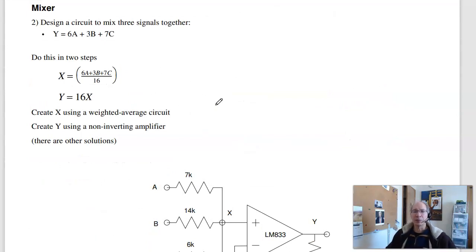Problem two is build a mixer. And there are many ways to do this. One approach is to do it in two stages. First, I'll find the weighted average of a, b, and c. Call that x. And here's divide by 16, because the sum of the coefficients is 16. This way, if a, b, and c are all 1 volt, x is 1 volt. Then to clear the denominator, multiply by 16.